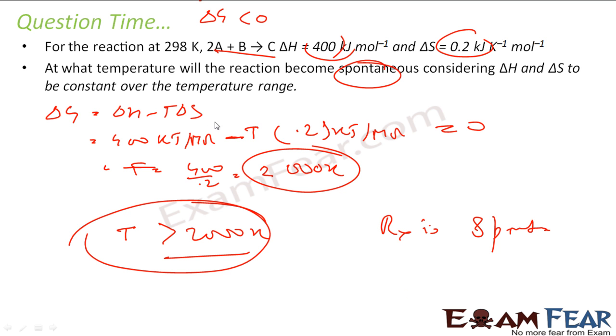Well, directly you can write this: for this to be spontaneous, make this guy as less than zero. So you will find that T comes out to be greater than 2000.